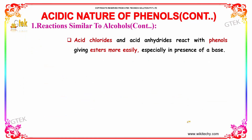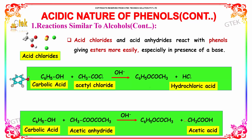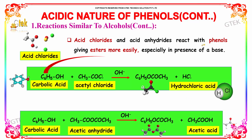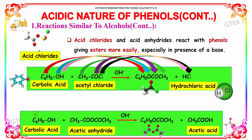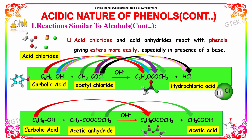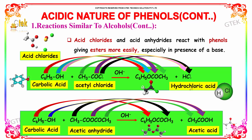Acid chlorides and acid anhydrides react with phenols giving esters more easily, especially in the presence of a base. When phenol reacts with acetyl chloride, it removes the OH group, thus forming C₆H₅OCOCH₃ along with hydrochloric acid.